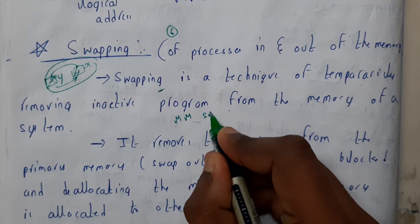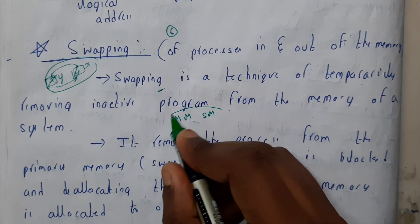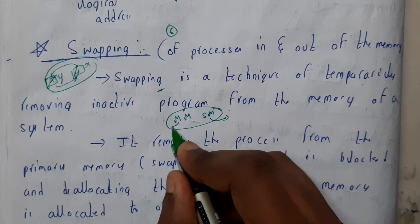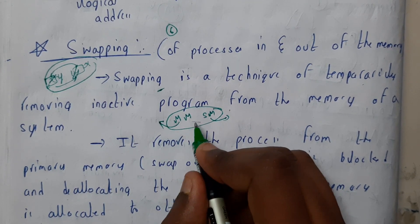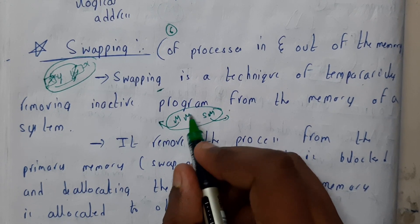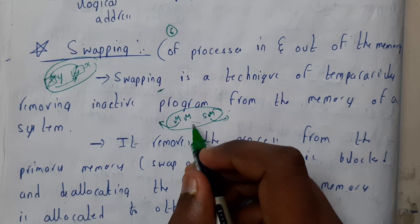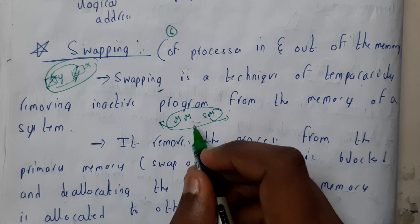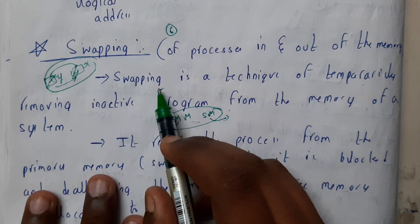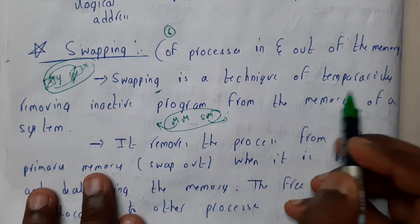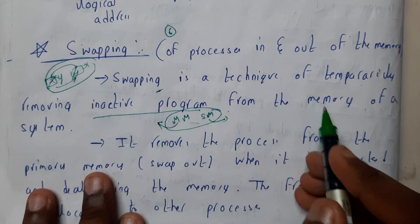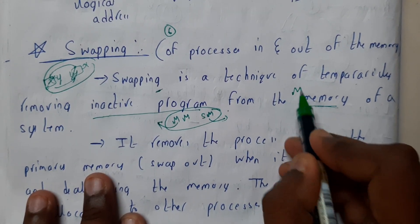The secondary memory is nothing but our disk, and main memory is where our processes are located and ready for execution. Swapping is a technique of temporarily removing inactive programs from the main memory of a system.